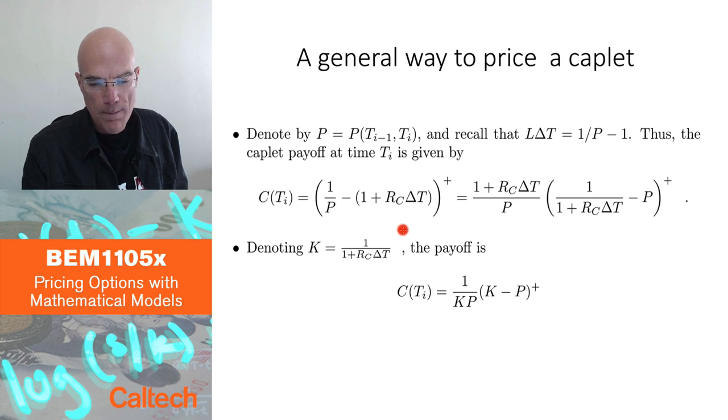And now I'm going to do the following trick. I'm going to factor out 1 plus Rc delta T over P, and I'm going to get here 1 over 1 plus Rc delta T minus P positive. So now this part looks like a put option, and I'm going to call this K for the strike price. So I'm going to think of this as a strike price of a put option, except it's not quite the put option because I'm multiplying with this thing, which is random. P is random here.